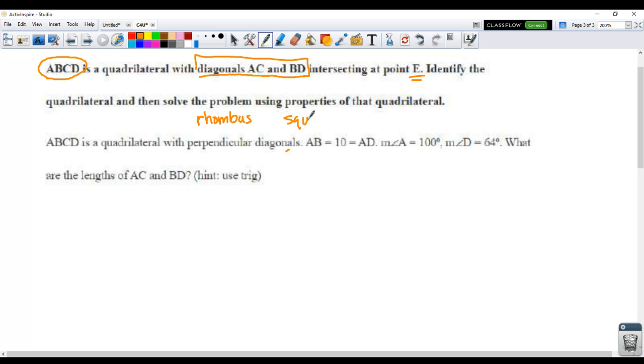A rhombus does, a square does, and a kite does. All three of these shapes have perpendicular diagonals. Now in order for it to have been a rhombus or a square, we would have to know that it is a parallelogram. Okay, because we don't know it's a parallelogram, we can't say that definitively it is a rhombus or a square. So this is in fact going to be a kite.